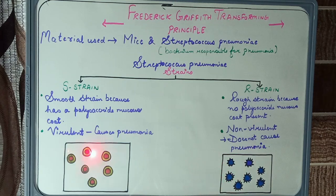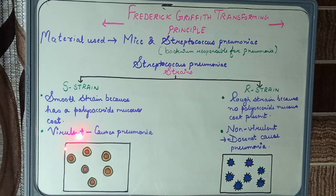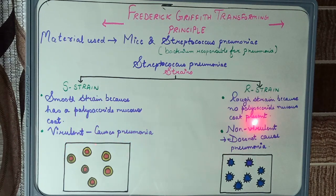S strain is a virulent strain, meaning it causes pneumonia. Virulent means disease-causing. Whereas R strain is non-virulent because it does not cause pneumonia.